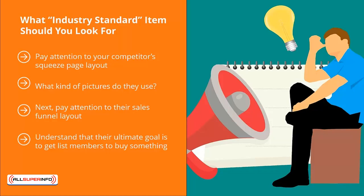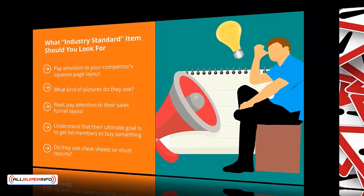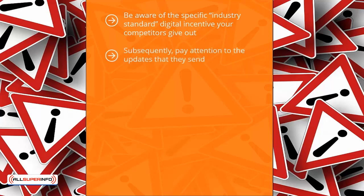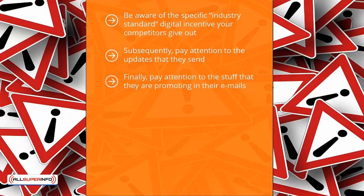Pay attention to the freebies or incentives your competitors offer to get people to sign up to their mailing list. Do they use cheat sheets, short reports, or full books? Do they attract list members with a special video or promise insider information? Be aware of the specific industry-standard digital incentive your competitors give out — you are going to have to offer something similar to start. Also pay attention to the updates they send: do they talk about news and events, or teach email recipients a wide range of solutions? Finally, pay attention to the products and services they are promoting in their emails and identify the most common products they push.